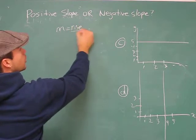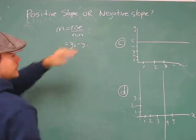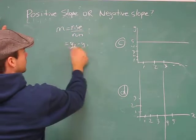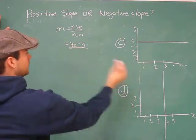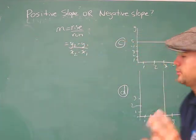M equals rise over run. That's y2 minus y1, that's our difference in height, over our difference in left to right, x2 minus x1. So let's pick out two points on this.